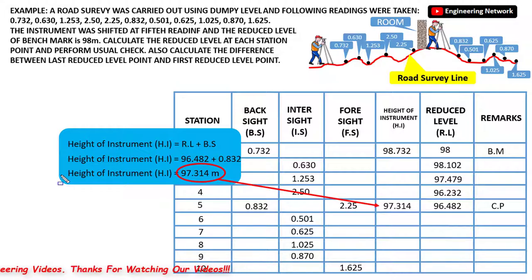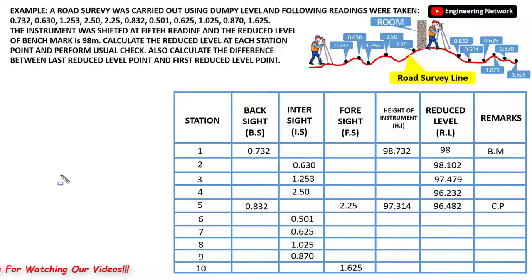After that I follow the same process and calculate the reduced level for the remaining station points. This is the complete line of collimation or height of instrument table. If you want to work as a surveyor, you will get this type of table — also called a level field book — and you will be asked to fill it on site. Kindly watch this video completely so that you can learn how to fill this table.